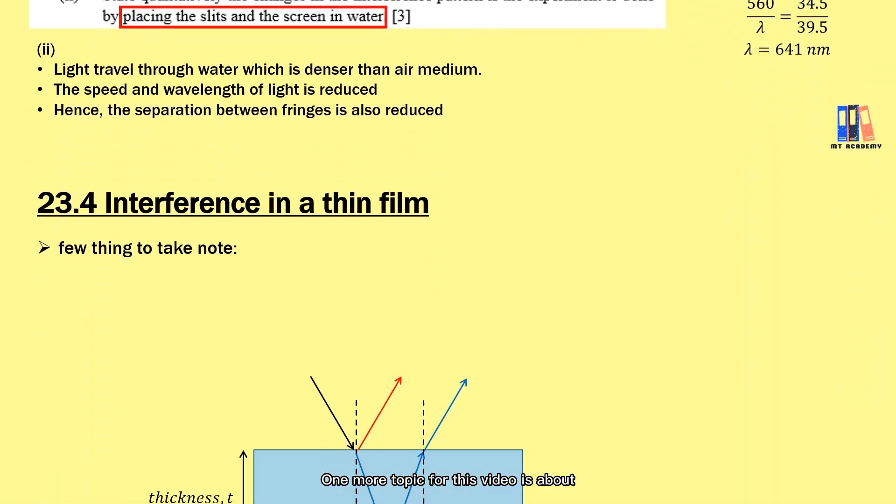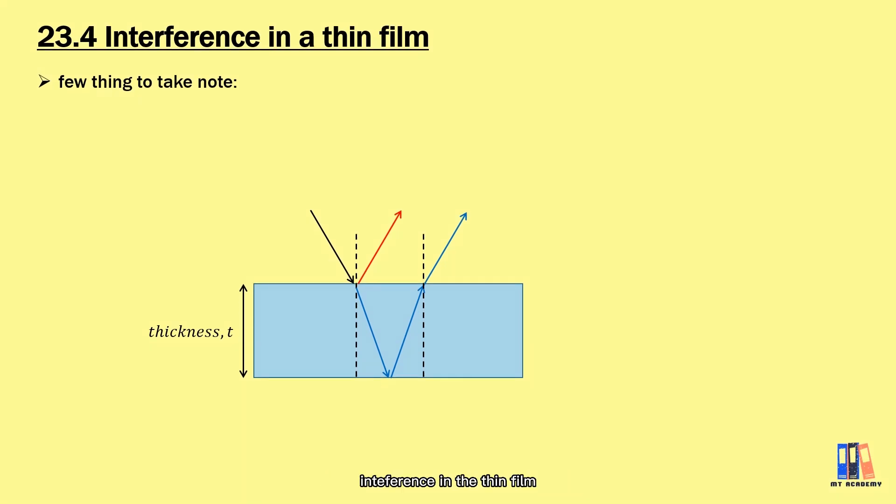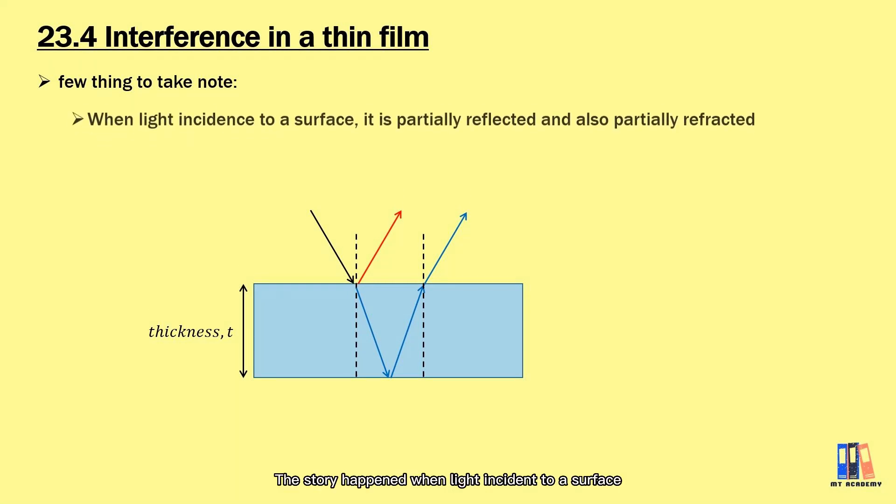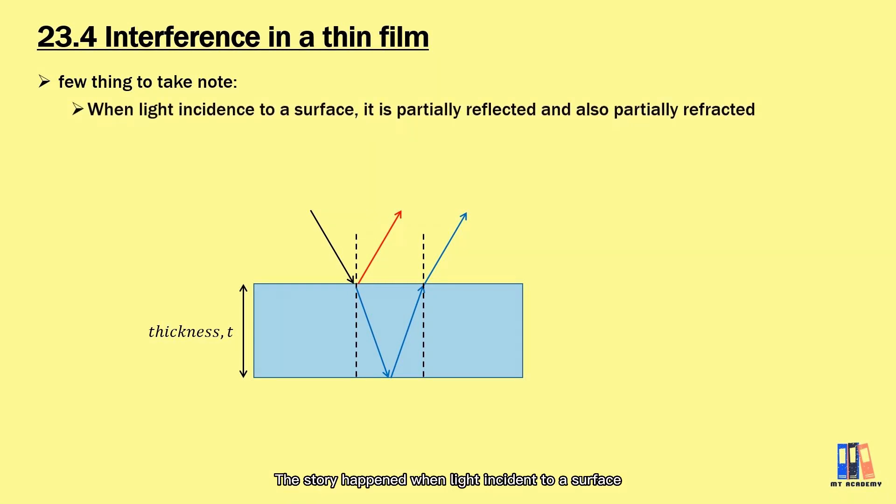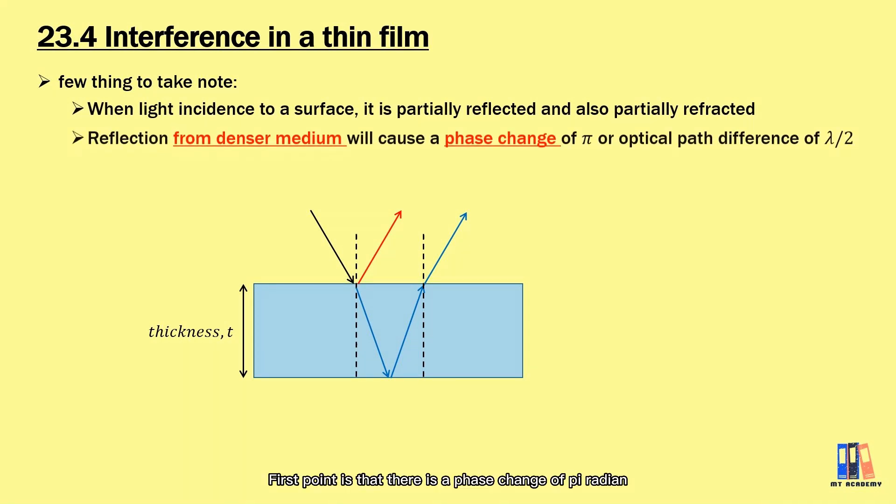One more topic for this video is interference in thin film. To cut it short, I would highlight a few things to solve any related question. The story happens when light is incident to a surface, so there is a portion of light reflected and the rest is refracted into the medium. First point is that there is a phase change of π radian when light is reflected from a denser medium, which is equivalent to the optical path of λ/2.